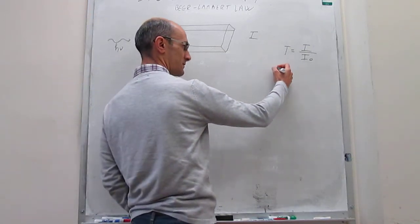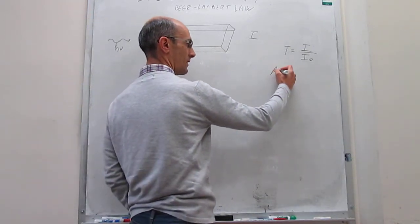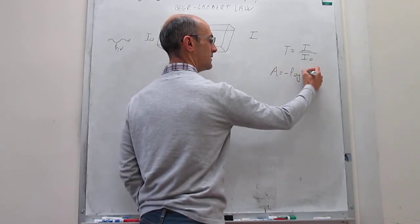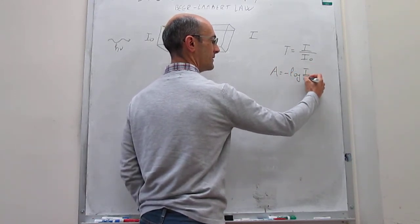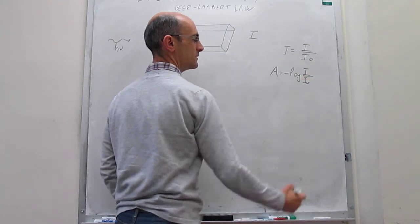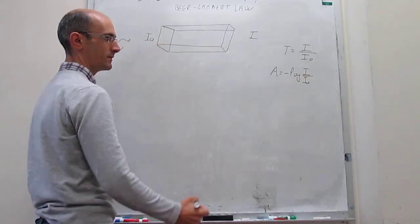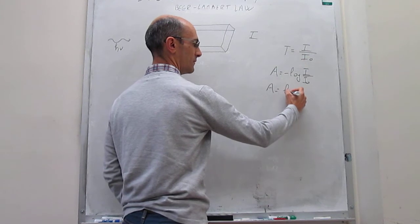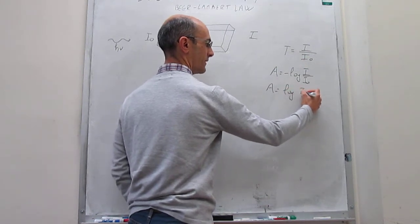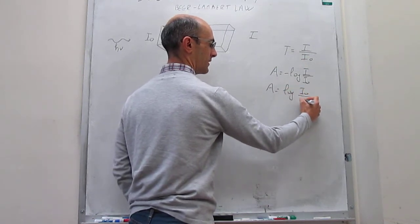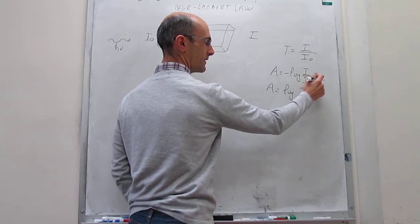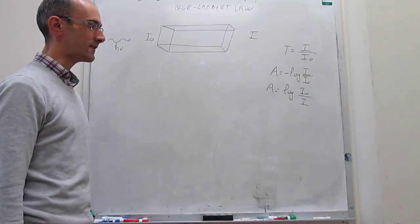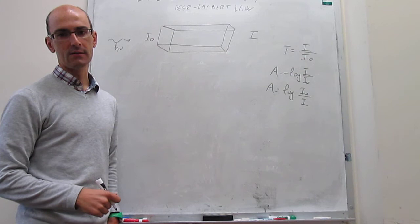From here, we define the absorbance as the minus base-ten log of the transmittance. Notice that this is also exactly the same as the base-ten log of I₀ over I — the only thing we've done is flip the ratio inside the logarithm, and this changes the sign.